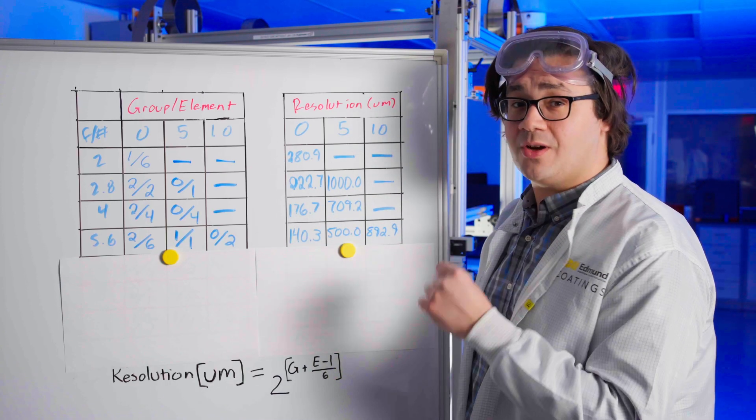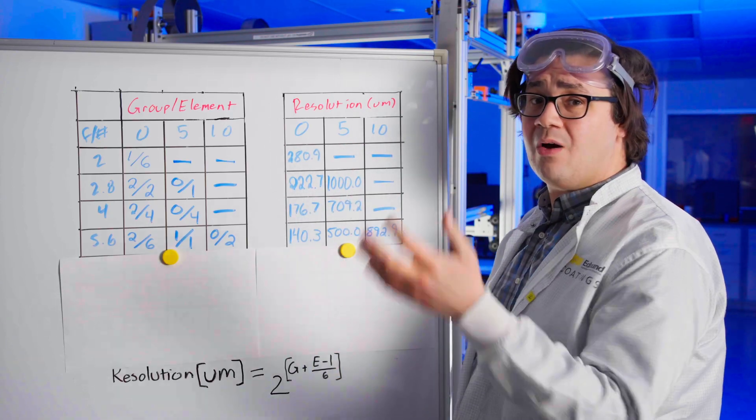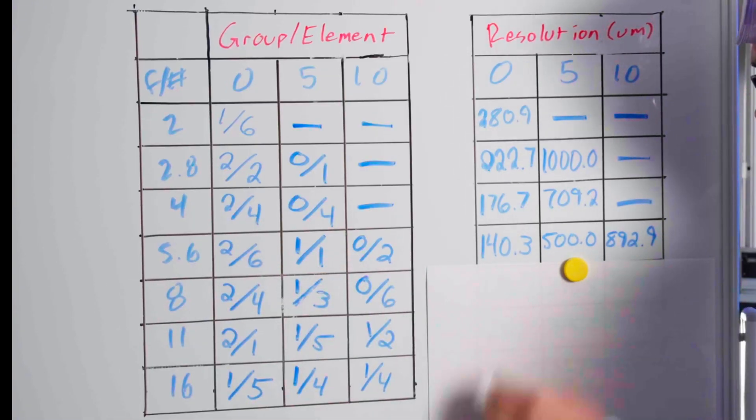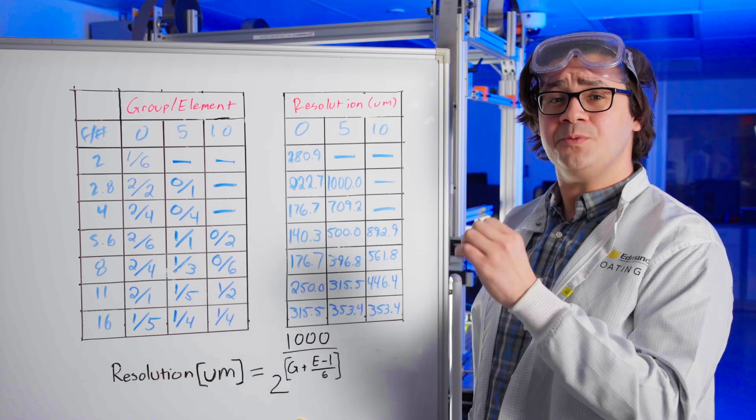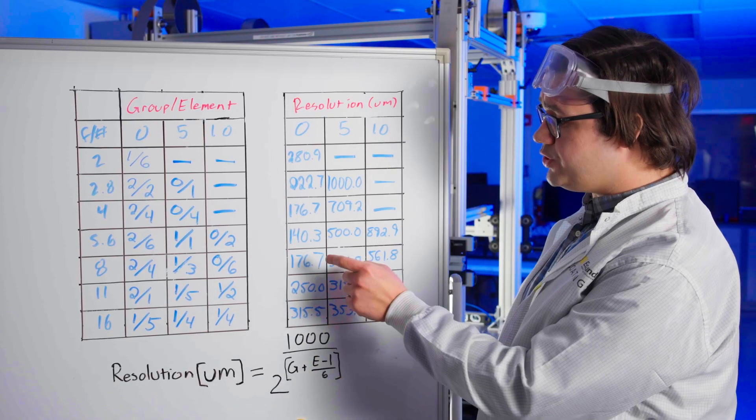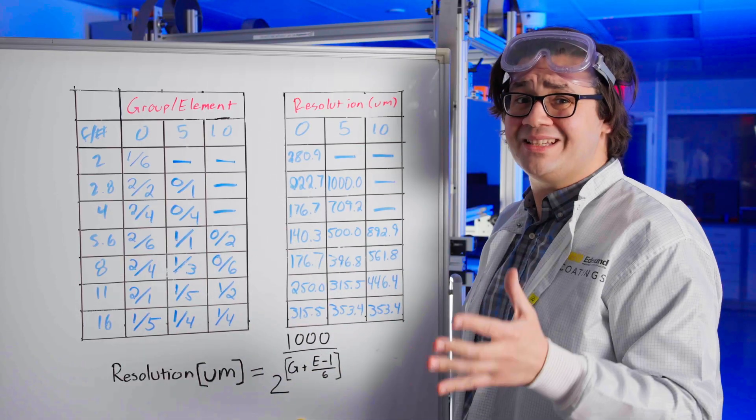We can see as we increase our F number, our resolution also increased at all three positions. However, this trend won't last forever. As we reach our physical limitation of resolution, or diffraction limit, our resolution begins to decrease. And with each subsequent stop, that limit continues to drop.